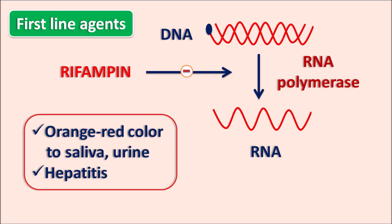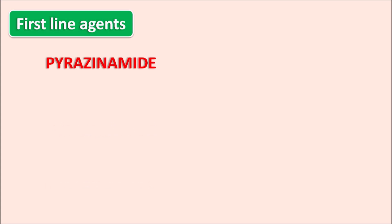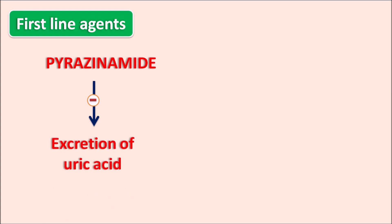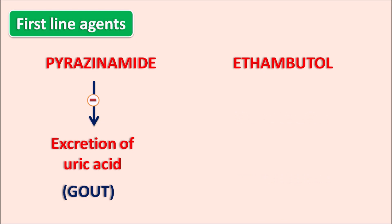Rifampin is an enzyme inducer which can produce drug interactions when given with other drugs metabolized by the cytochrome P450 system. The third drug is pyrazinamide, which inhibits mycolic acid synthesis by an unknown mechanism. Pyrazinamide is converted into pyrazinoic acid, its active metabolite. This drug inhibits the excretion of uric acid, resulting in increased plasma uric acid levels, which may precipitate gout in susceptible patients. Similarly, ethambutol also inhibits uric acid excretion and can precipitate gout.